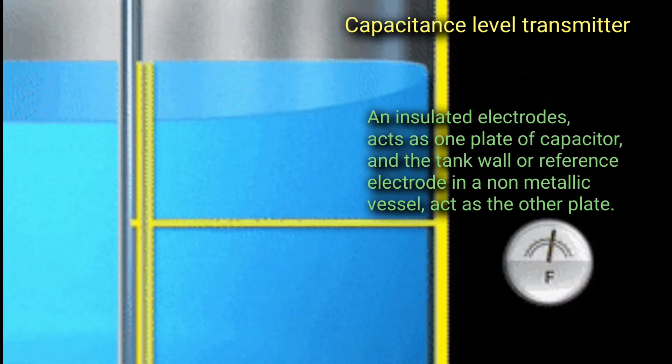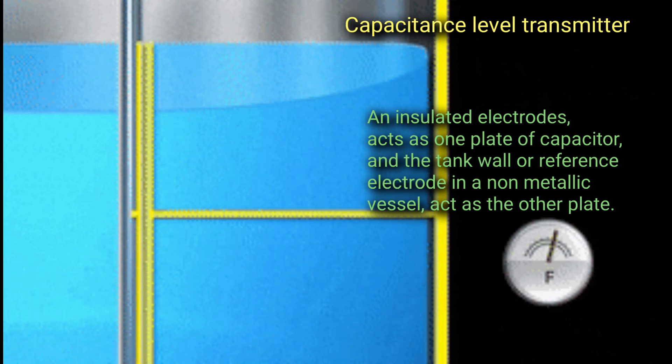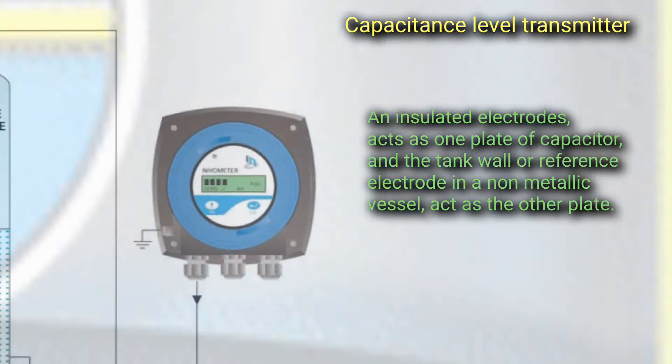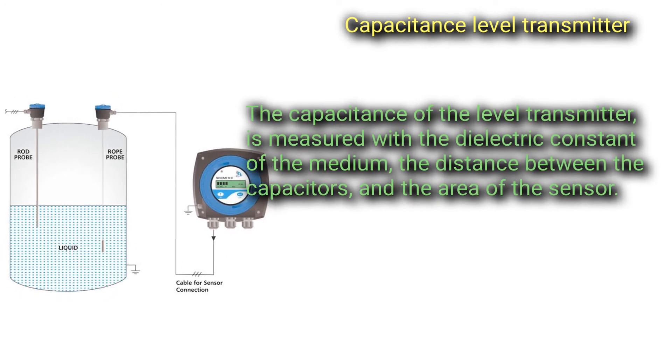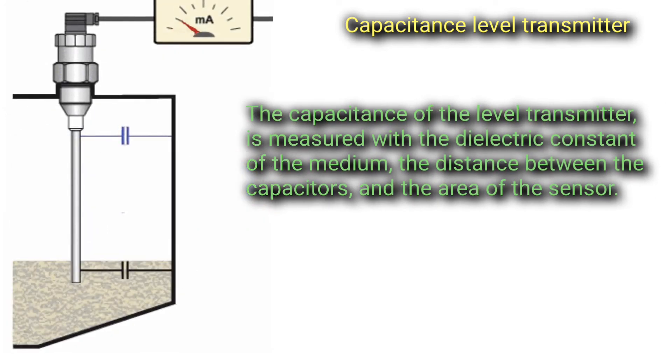An insulated electrode acts as one plate of the capacitor, and the tank wall or reference electrode in a non-metallic vessel acts as the other plate.